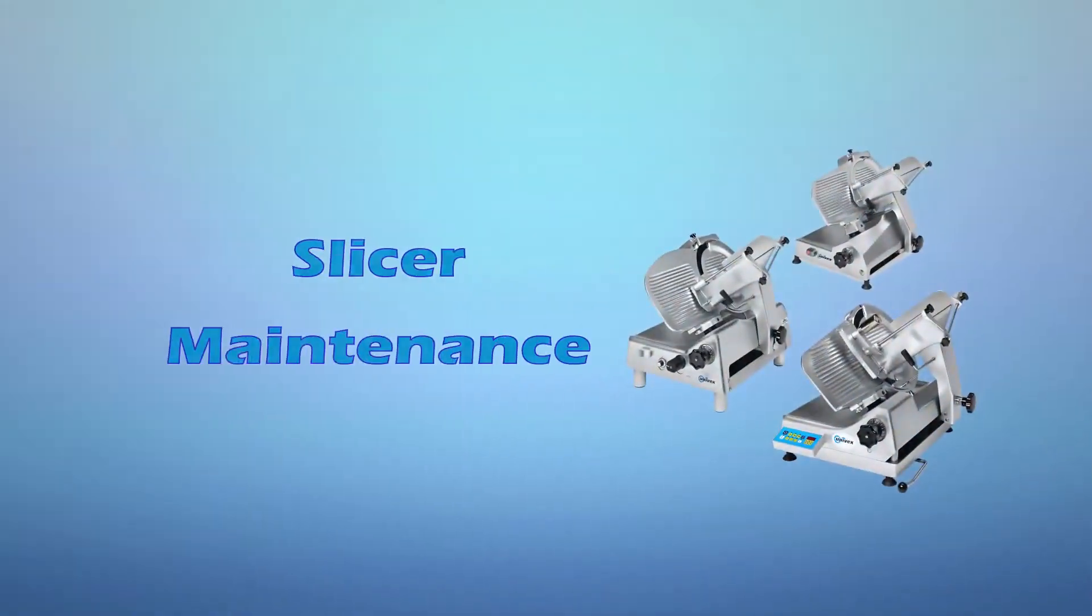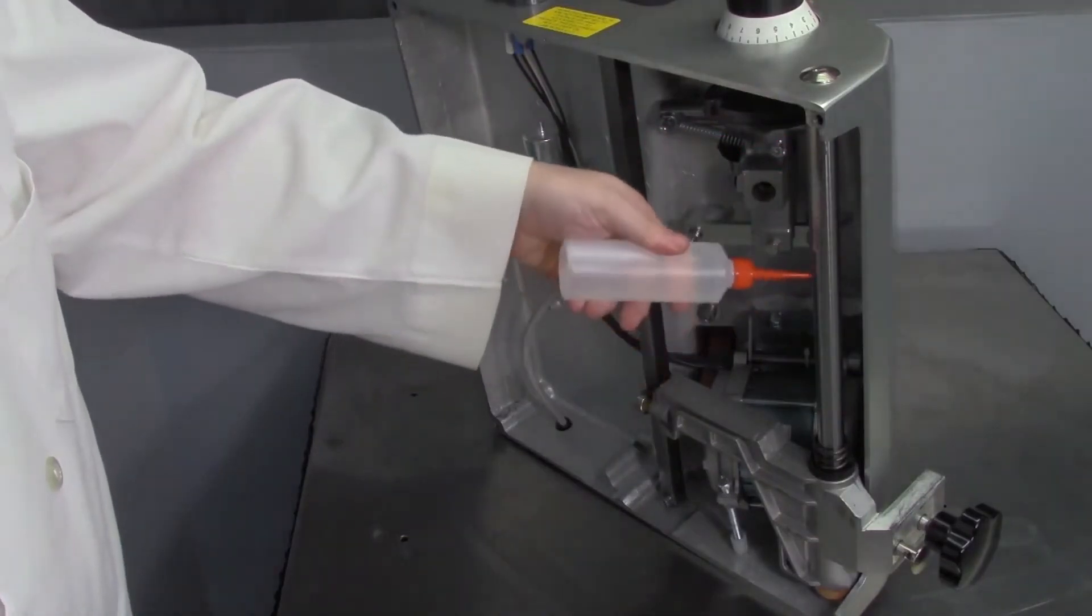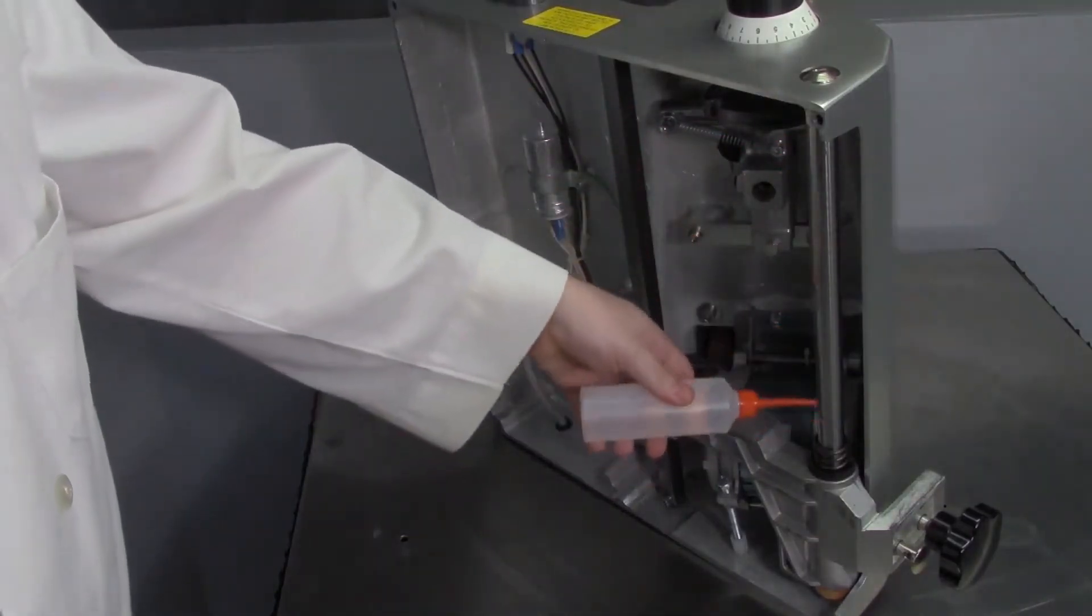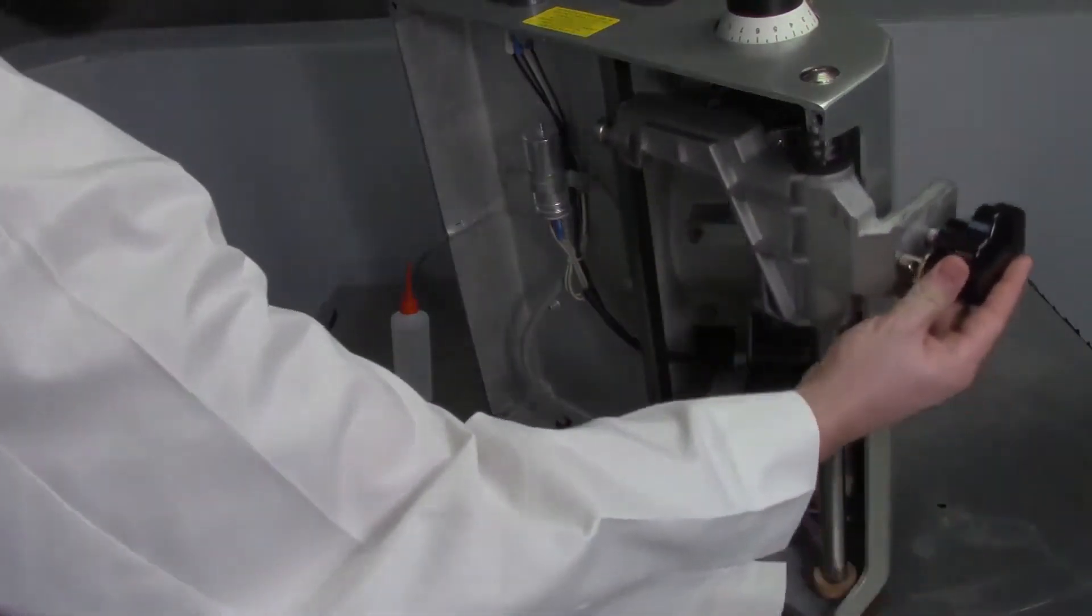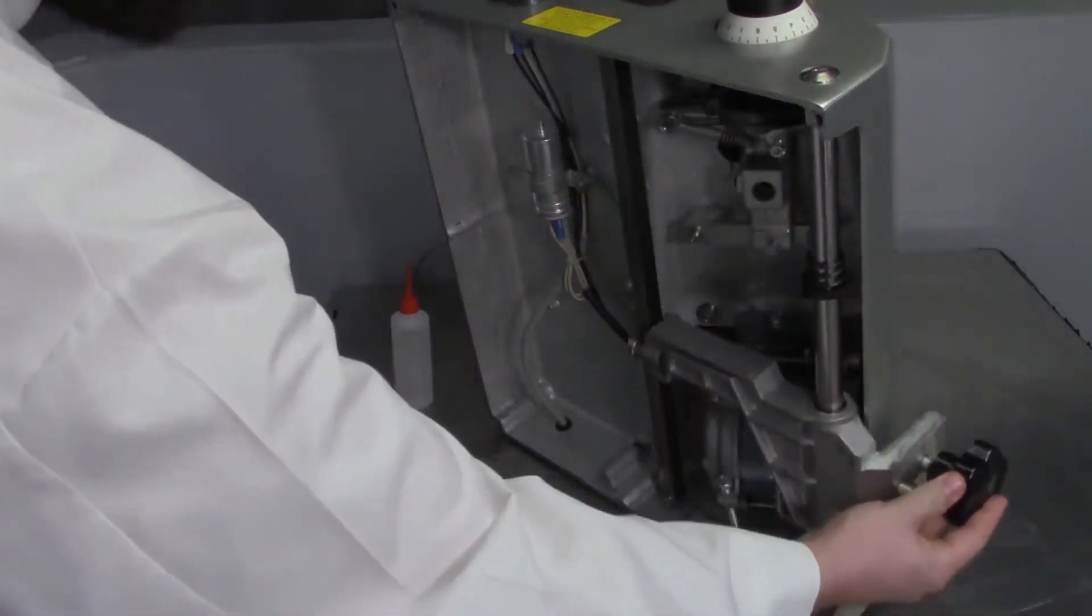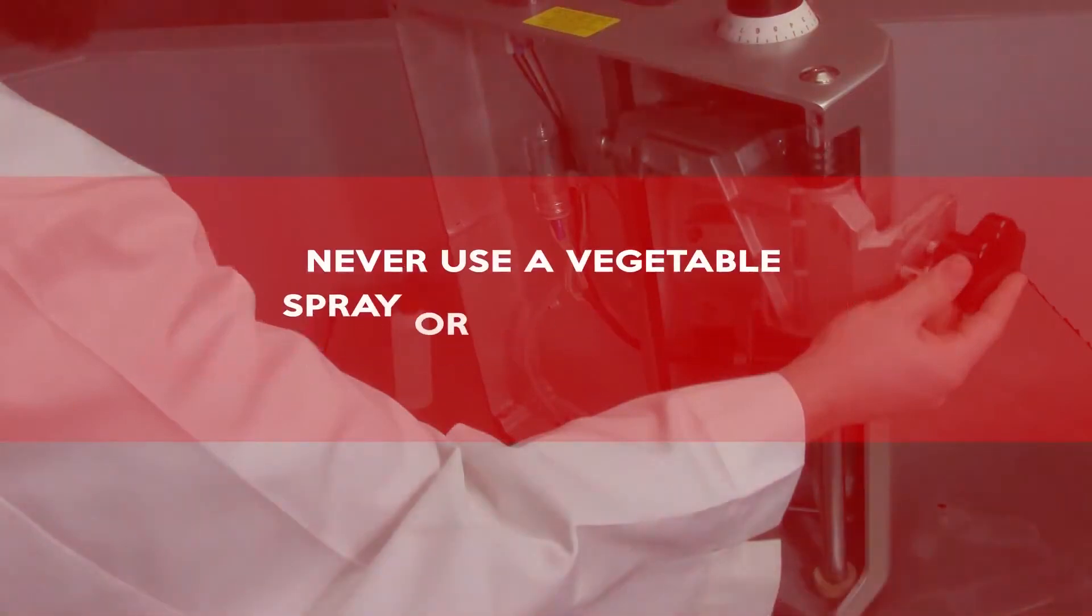Slicer maintenance. Periodic lubrication is necessary to properly maintain your slicer. General lubrication with food grade mineral oil is recommended weekly. Never use a vegetable spray or cooking oil to lubricate the slicer.